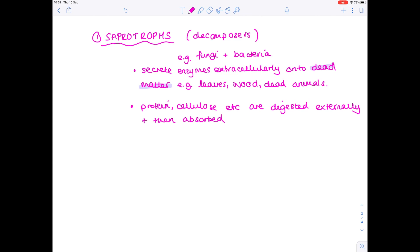So protein, cellulose, and other organic products are digested externally and then absorbed. The second heterotroph we need to discuss now are the consumers. As the name suggests, they take in foodstuffs by the process of feeding, i.e. ingestion.